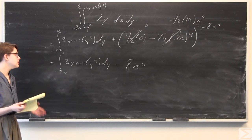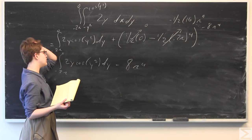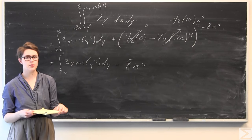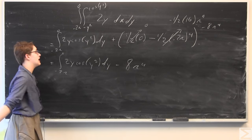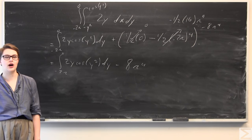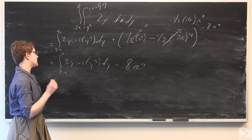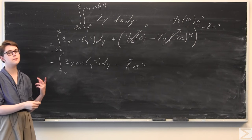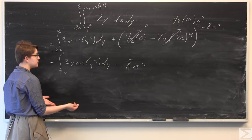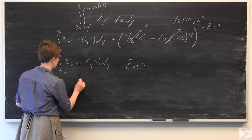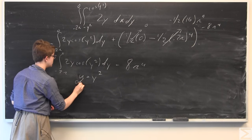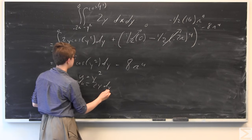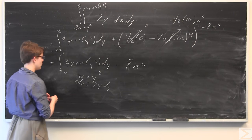Now we have just one integral left. The first approach: if you notice, what we have is the result of the chain rule applied to sine of y squared, since the derivative of sine y squared is 2y times cosine y squared. If that's not immediately obvious, you can also perform a u-substitution, letting u equal y squared, so that du equals 2y dy — and we have both 2y and dy present.